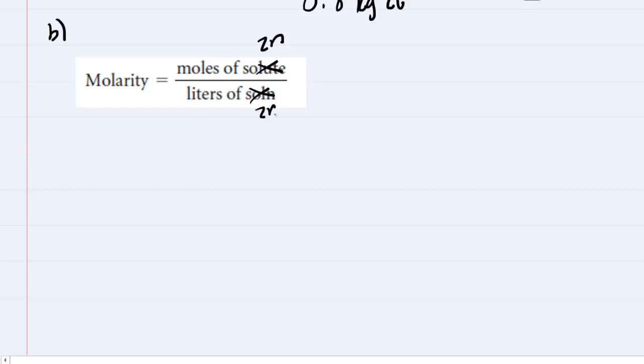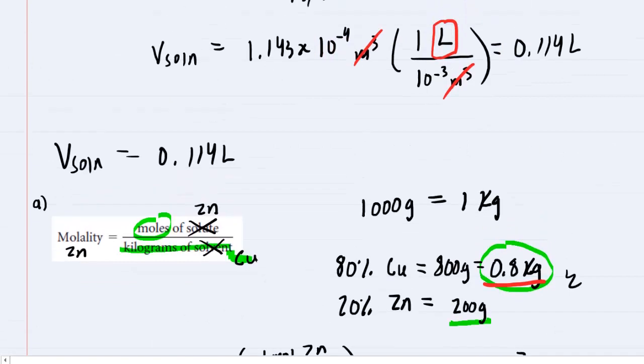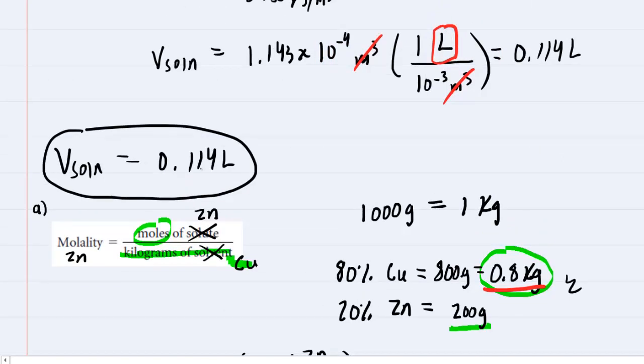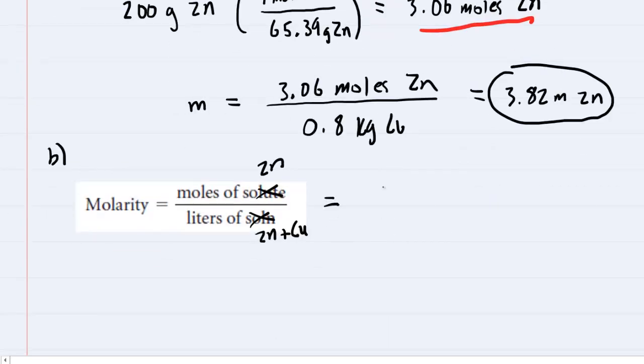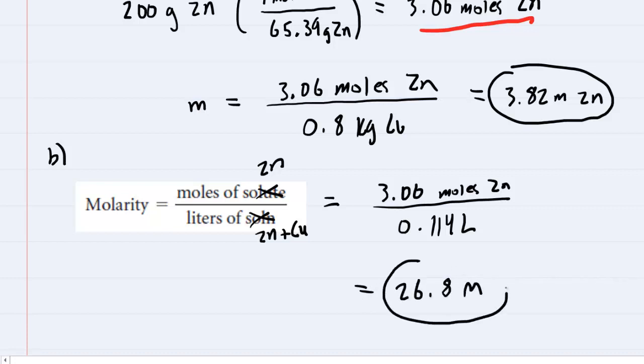The solution was zinc plus copper. We determined the liters of that solution earlier—0.114 liters. We take our moles of zinc solute and divide by the liters of the entire solution. When we work this value out, we get approximately 26.8 capital M. This is the correct answer to part B.